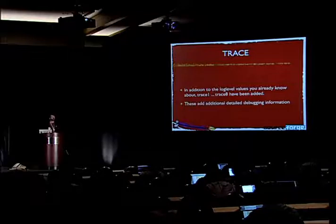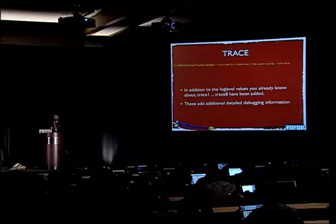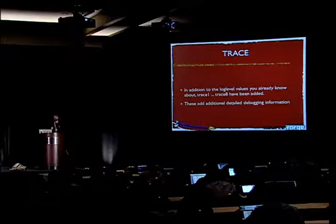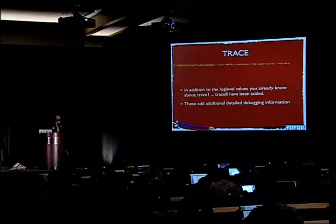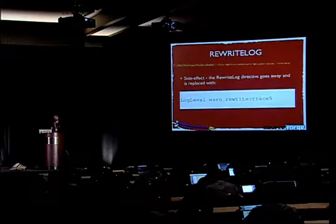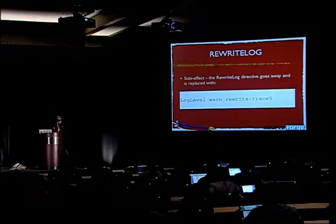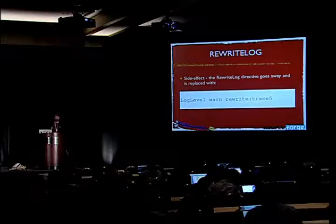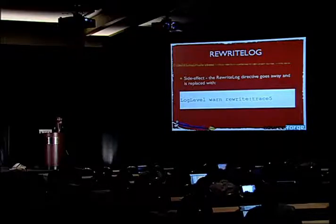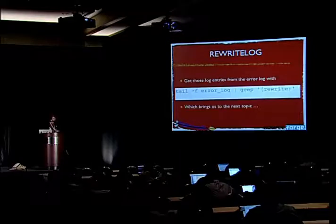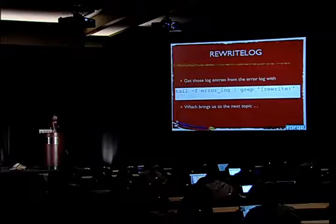Additionally, we've added several new log levels called trace1 through trace8. This allows module authors to provide really detailed debug trace information so you can figure out exactly what's going on when something goes wrong. One side effect is that mod_rewrite's dedicated RewriteLog directive has gone away and is replaced by this per-module configurable log level. If you want to pull out just the log messages relating to a particular module, you can simply pipe your log file through grep looking for a module name.